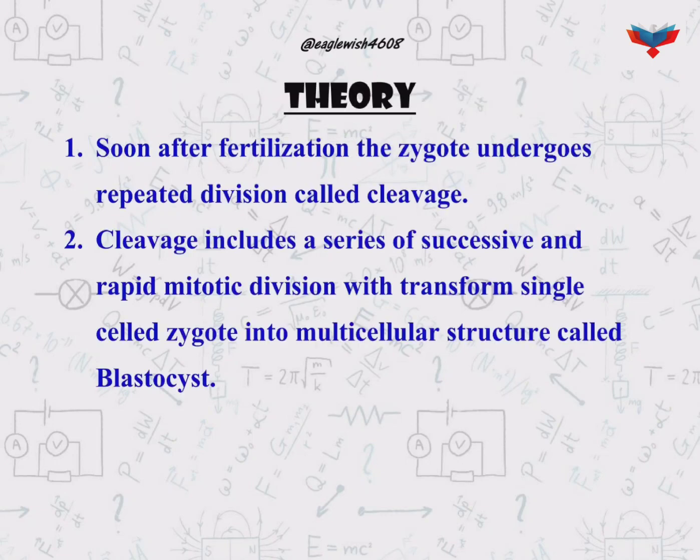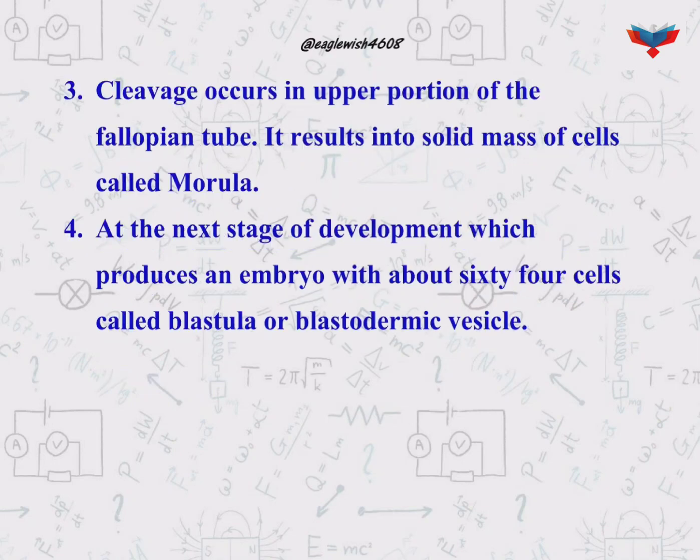In the theory section we will write about blastula. Blastula is a hollow sphere of cells, or blastomeres, produced during the development of an embryo by repeated cleavage of a fertilized egg or zygote.